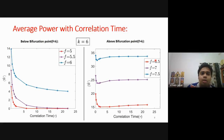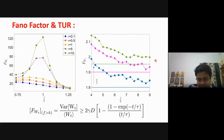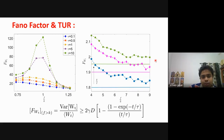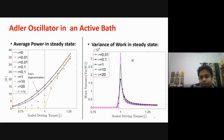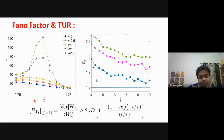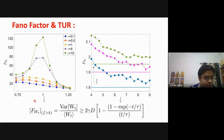[Question] In the right panel, are the circles, diamonds, and squares from numerical simulations? Yes. In the case of the active bath, these curves correspond to numerical results. You have to do multiple realizations over many initial conditions to get the non-equilibrium quantities to converge. We reached the steady state using around 10^5 trajectories.